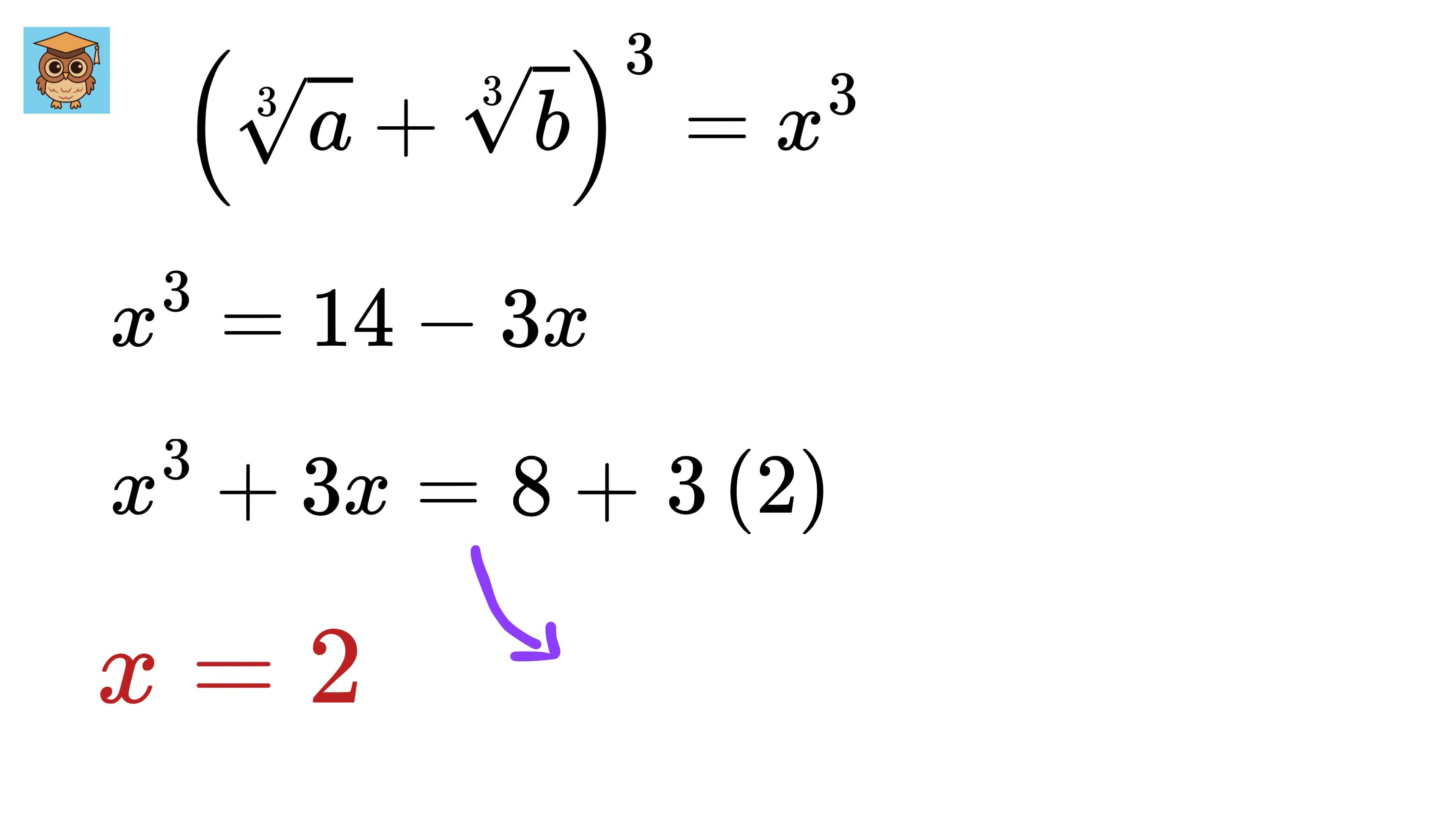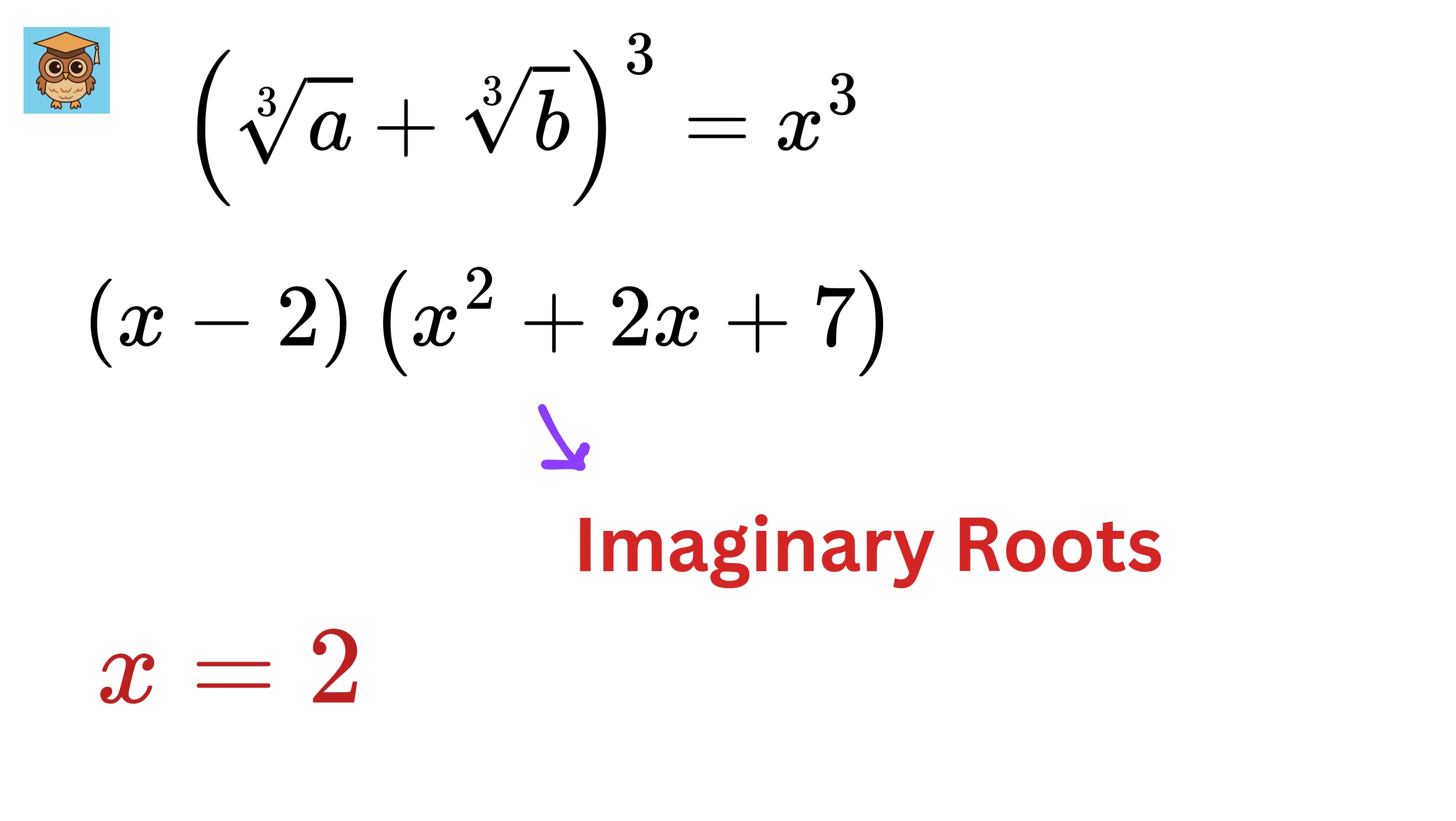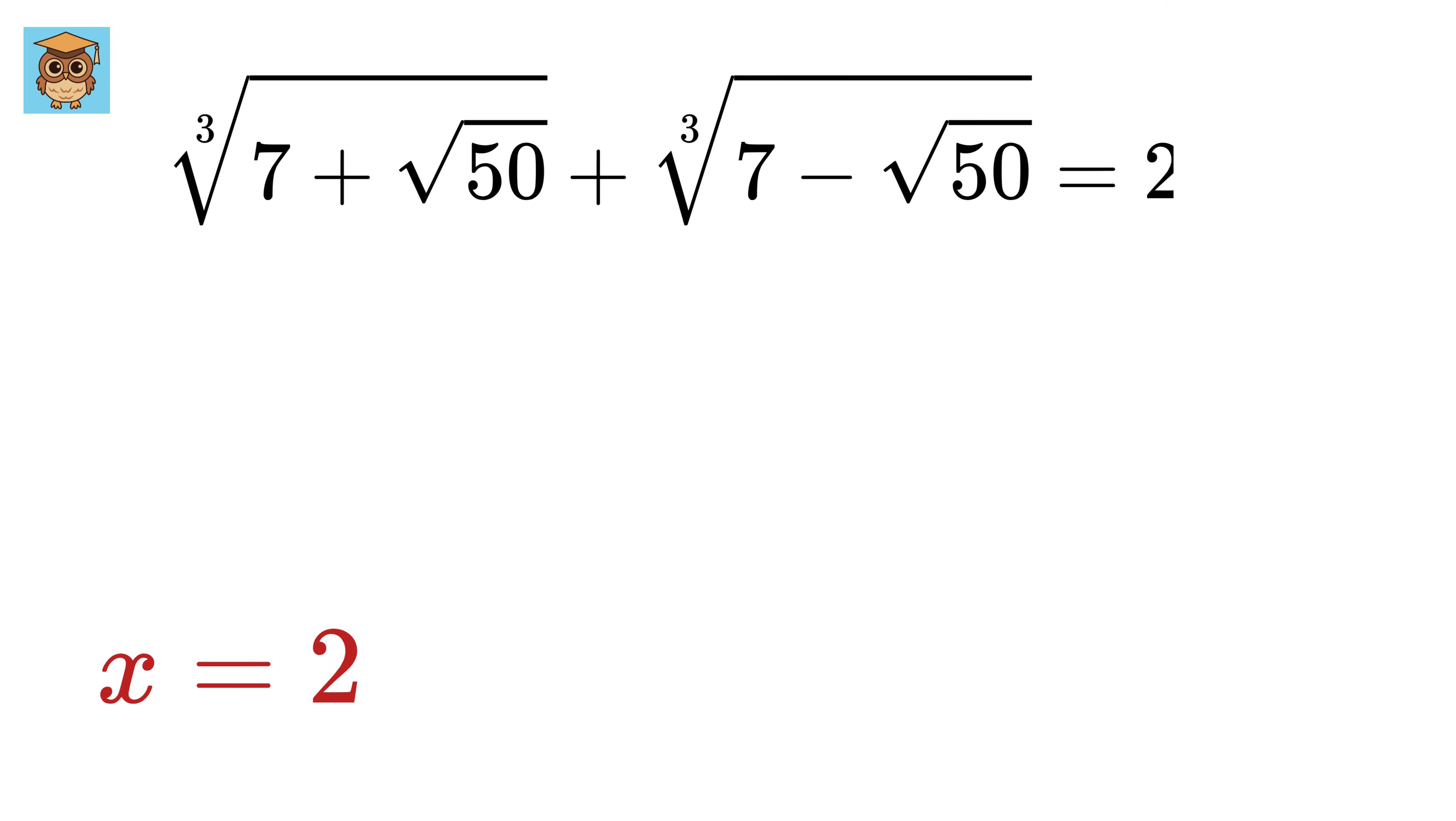After that, we can factor this equation to get X minus 2 times this quadratic equation. The roots of this quadratic equation are imaginary. Therefore, the only real value of this sum is 2.